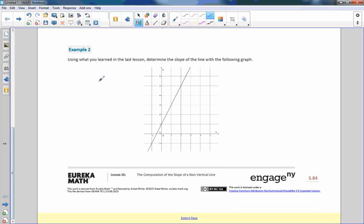Moving on to example 2, using what you learned in the last lesson, determine the slope of the line with the following graph. So again, I'm going to find where it's crossing right on a corner. So with that said, then now I know that the distance from here to here is 1, and then the rise is up 2. So 2 over 1, or simply the slope equals 2.